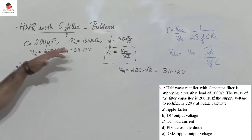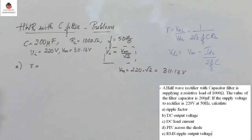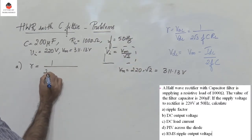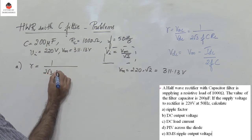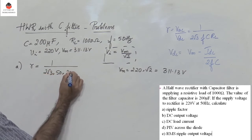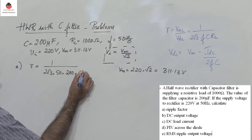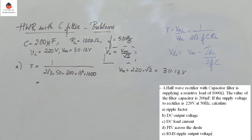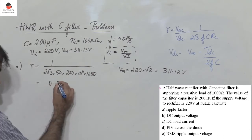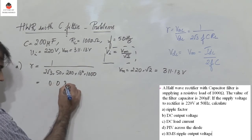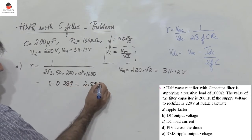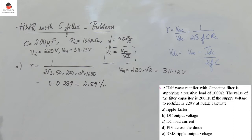All the values are given, so just substitute: 1 divided by 2 root 3, F is 50, C is 200 micro (10 to the power minus 6), and RL is 1000. When we do the calculation, we get gamma equals 0.0289, or 2.89 percent. This is the ripple factor.